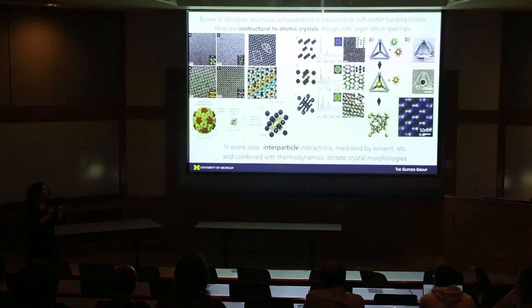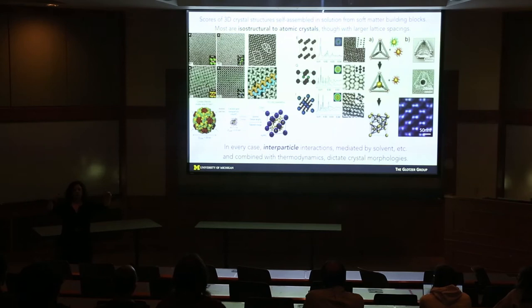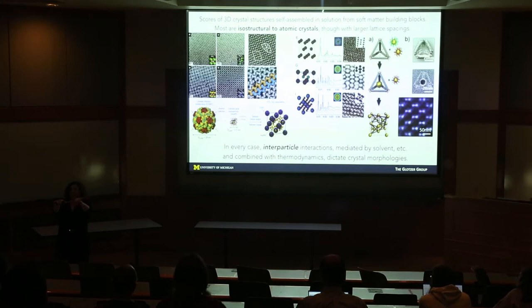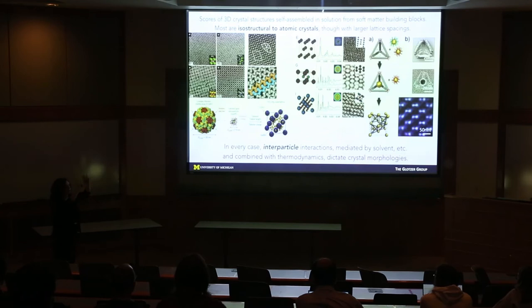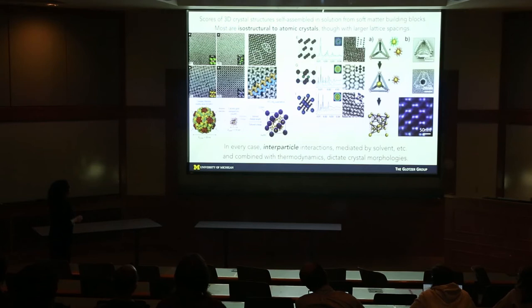Here's an example from Frank Bates' group at Minnesota. These are triblock copolymers — long chain molecules with three different blocks of monomers covalently bonded together — and they self-assemble into interesting structures. His triblock copolymers self-assemble into micelles, where each bright dot is one micelle containing hundreds or thousands of polymers. Those micelles then form a crystal structure called the sigma phase, which is one of the Archimedean tilings.